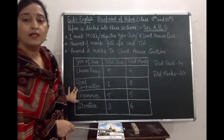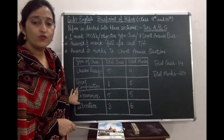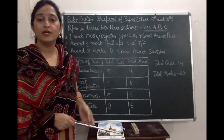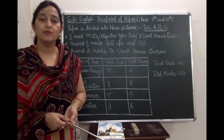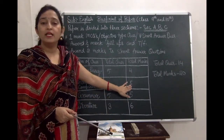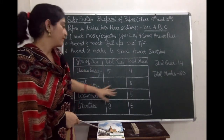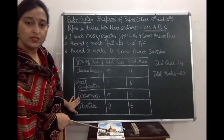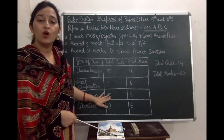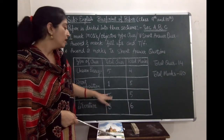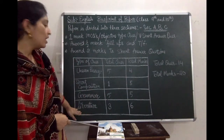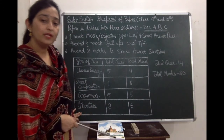For short composition (writing portion), you will get one question — either story writing or letter writing — and it carries five marks. For the grammar portion, from one topic such as tenses or modals, you will get five questions with one mark each, totalling five marks.